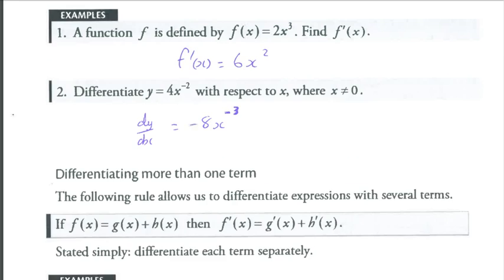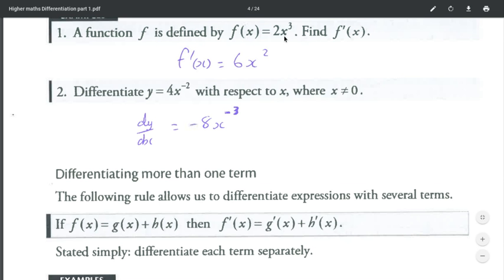So it goes straight into an example which generally makes it make a bit more sense. So f(x) equals 2x cubed. Rather than just bringing the 3 to the front and multiplying it by x, we do 3 multiplied by 2 which is 6x, and drop the power by 1 so it's 6x squared. So 3 to the front, 3 times 2 is 6, drop the power by 1, 6x squared.